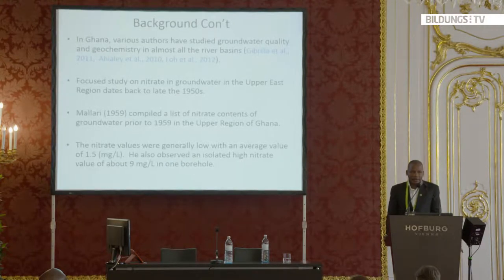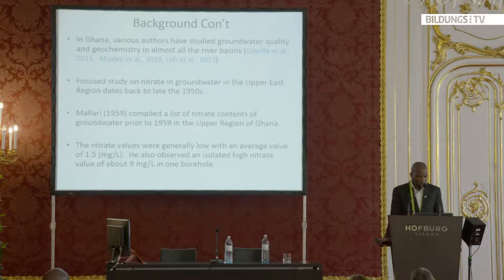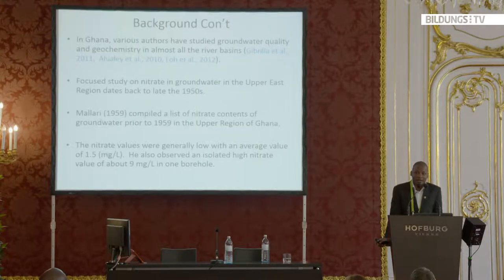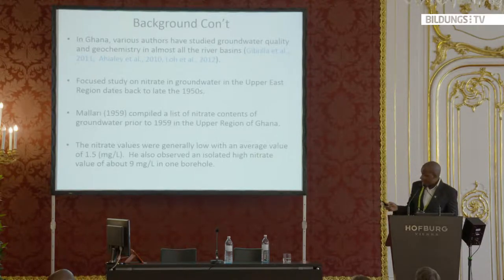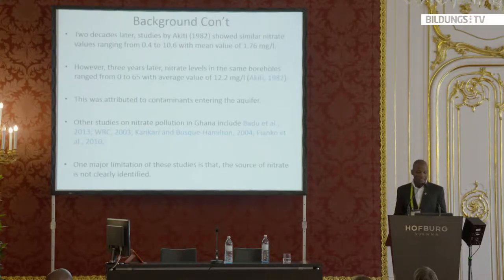In Ghana, a lot of studies have been done on groundwater quality issues in almost all the basins. The amount of solute concentration in the water is known and water quality studies have been done across almost all basins. But much work is not focused on nitrate contamination. For my study area, the first nitrate levels were reported by Malari in 1959, who compiled nitrates in groundwater and observed an average value of around 1.5 milligrams per liter.